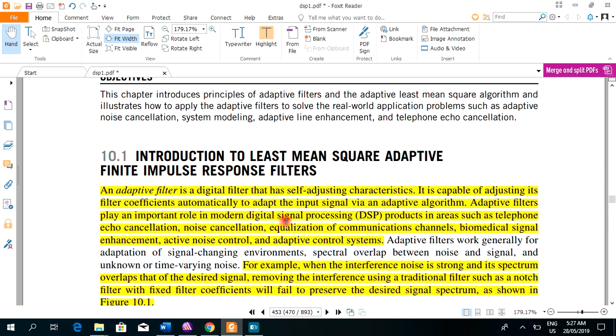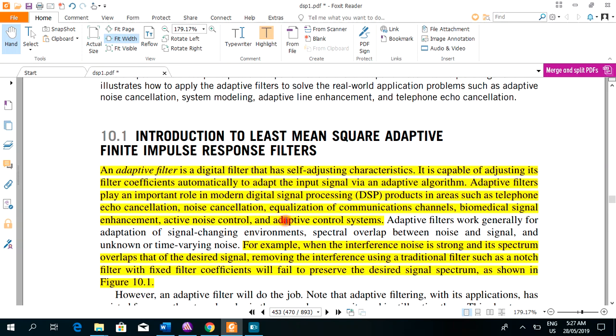Adaptive filters work generally for adaptation of signal changing environment, spectral overlap between noise and signal and unknown or time varying noise. For example, if the noise is changing its spectrum with respect to time, then to notch out or to figure out that noise we will have to use adaptive filter.